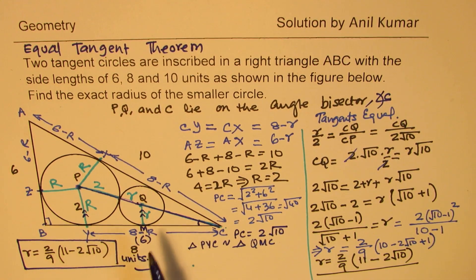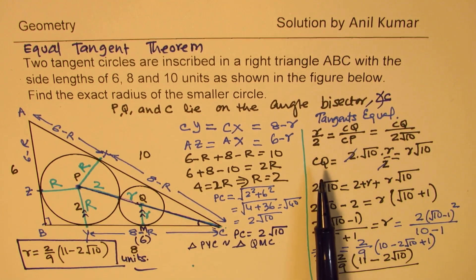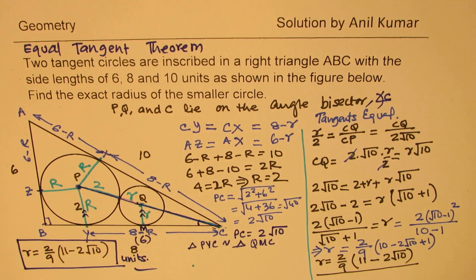On the basis of similar triangles, the ratio of the sides are equal. Substituting the value of PC, we found a relation involving the small radius r and calculated the final value. I hope the steps are absolutely clear. Feel free to write a comment and share your views. If you like and subscribe to my videos, that'd be great. Thanks for your time and all the best.